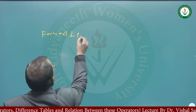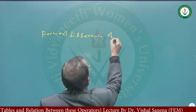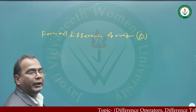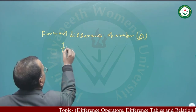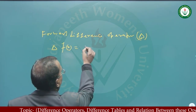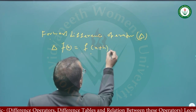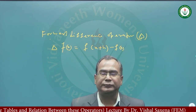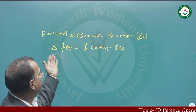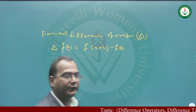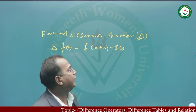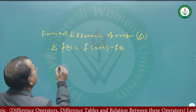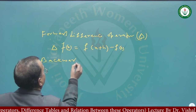This is the forward difference operator del. Del means the forward difference operator. Del is defined as: del FX is equal to F of x plus h minus FX. So in this way we can define it. This is the forward difference operator, and when it is applied on function FX it equals f(x+h) minus f(x).